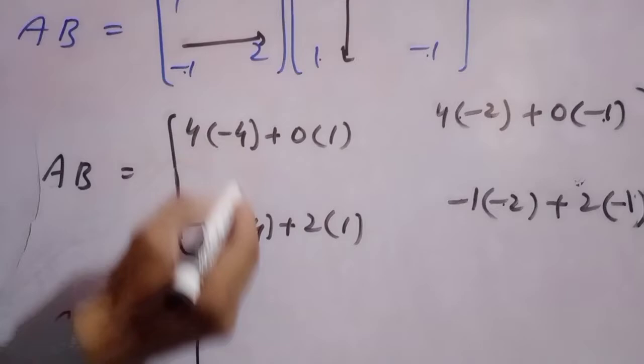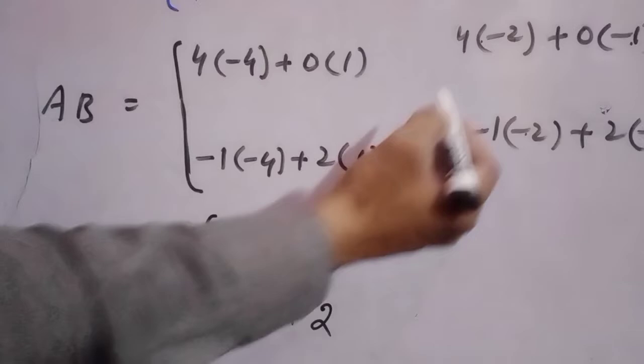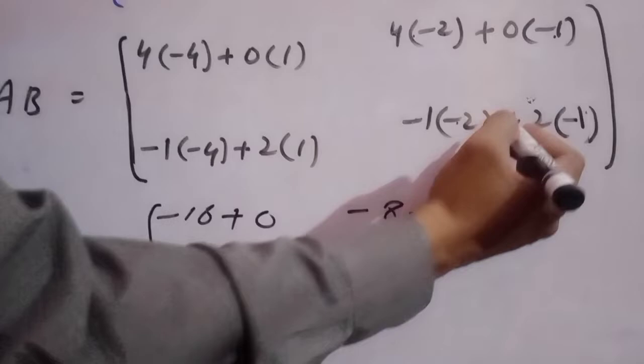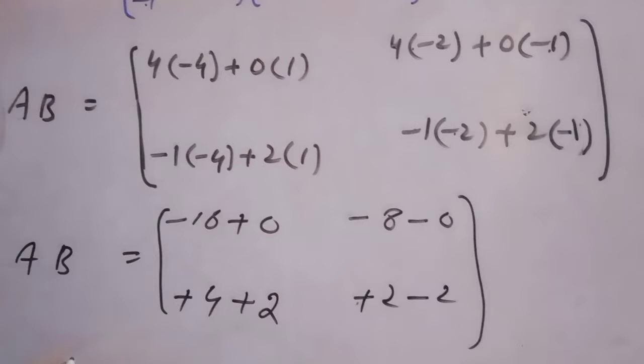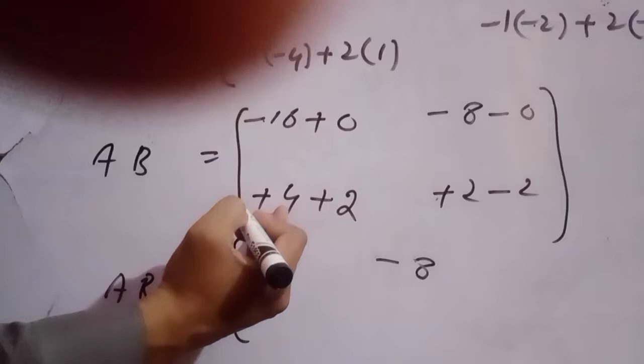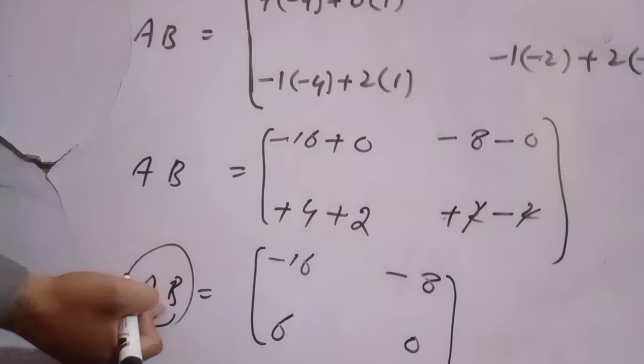अब इसको multiply करते हैं: 4 को minus 4 से multiply करेंगे minus 16, plus zero = 0. Minus minus plus 4; plus 2. 4 को minus 2 से multiply करें minus 8; plus 0; minus minus plus 2; plus minus minus 2. AB equal to: minus 16 plus 0 = minus 16; minus 8; 4 plus 2 = 6; plus 2 minus 2 cancel = 0. So students हमने AB find कर लिया।